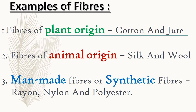Let us have a few examples of fibers. Number one, fibers of plant origin — these are fibers which we get from plants: cotton and jute. Number two, fibers of animal origin — as the name suggests, we extract these fibers from animals: silk and wool. Number three, man-made or synthetic fibers — these are fibers created or synthesized by man: rayon, nylon, and polyester are some examples.